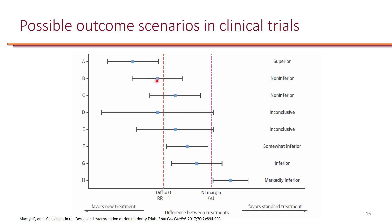In example B, it definitely crossed the line of no difference for superiority, so we cannot claim that intervention is superior to control. But because it didn't cross the delta, we can claim that the intervention is non-inferior to the control group. The same is true with example C. It doesn't matter if the point estimate is to the left or to the right of the line of no difference. What matters is that the confidence interval must not touch or cross the delta. Both B and C are considered non-inferior, and both failed superiority.